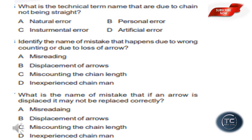Identify the name of mistake that happens due to wrong counting or loss of error. The options are misreading, displacement of arrows, miscounting the chain length, and inexperienced chain length. The answer is miscounting. If an arrow is displaced and may not be replaced correctly, the mistake is displacement of arrows.